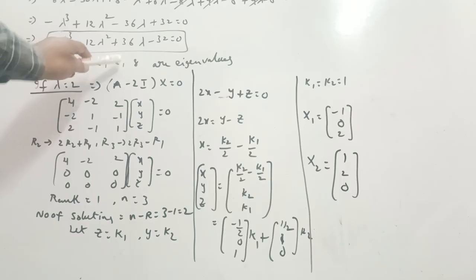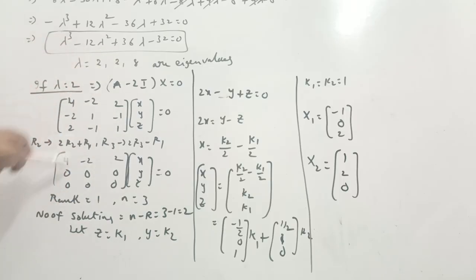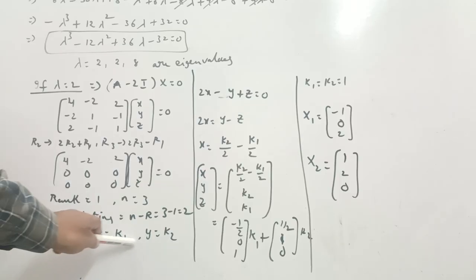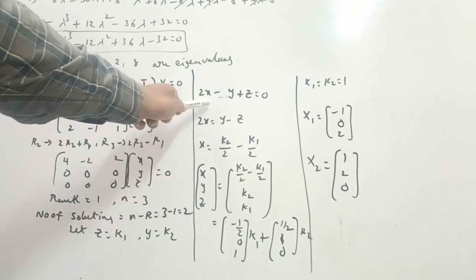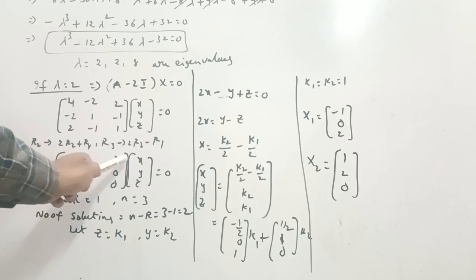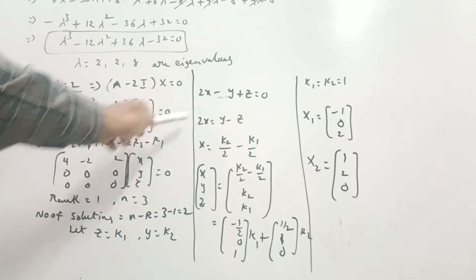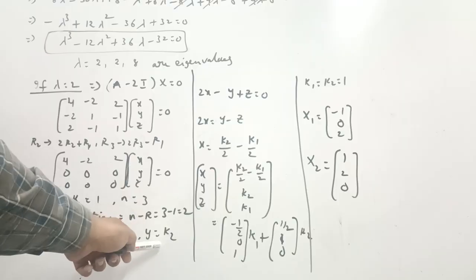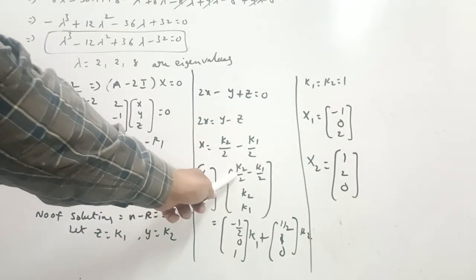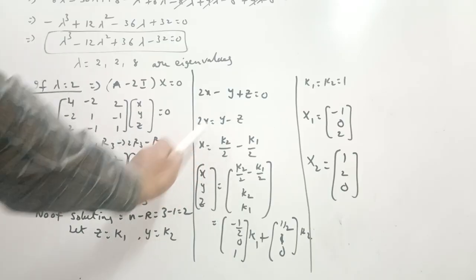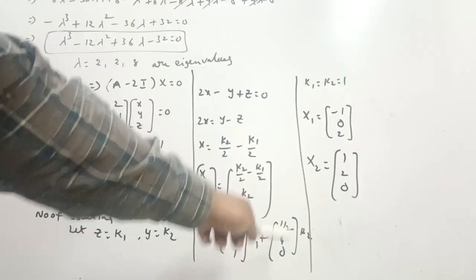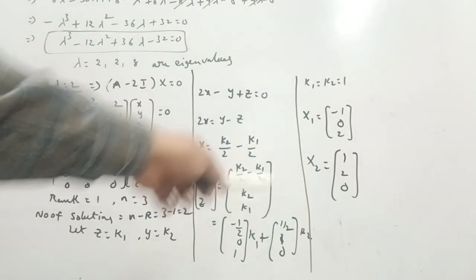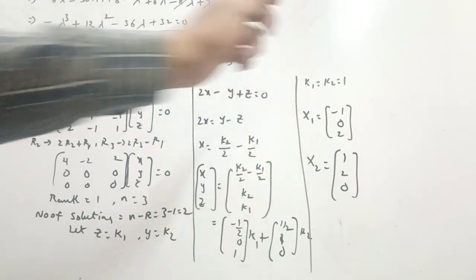Whenever two eigenvalues are the same, we use this method: find the rank, then the number of solutions n minus r, assume the free variables, substitute into the equation, separate k1 and k2 terms, then take k1 = 1 and k2 = 1 to get eigenvectors X1 and X2.